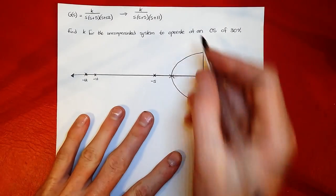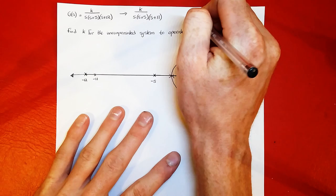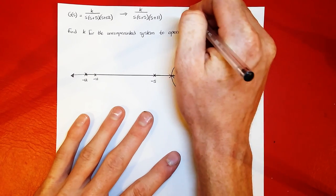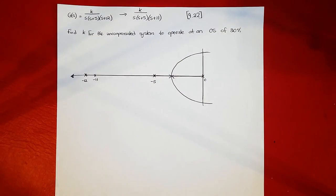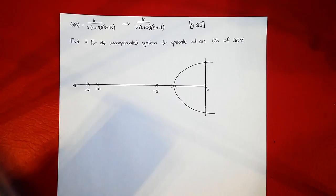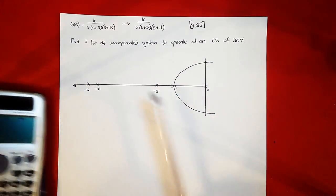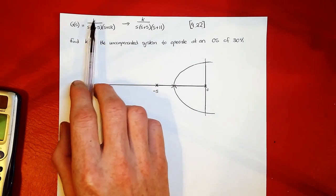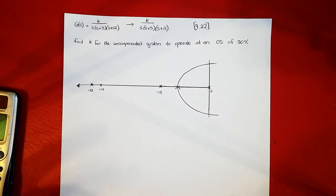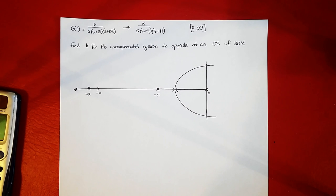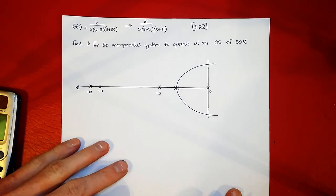We're doing question 922 from the Norman and Nice textbook on control systems. The purpose of this question is to show how to use your Casio calculator to find the exact K value as specified in the solution manual. It's for those who like being precise.